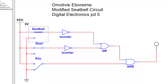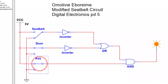And next, when the door is closed, the key is in the ignition, and the seatbelt is unbuckled, this causes the buzzer to go off. This shows that it requires the key to be in the ignition for any of the permutations to have an output of one, which is when the buzzer goes off.